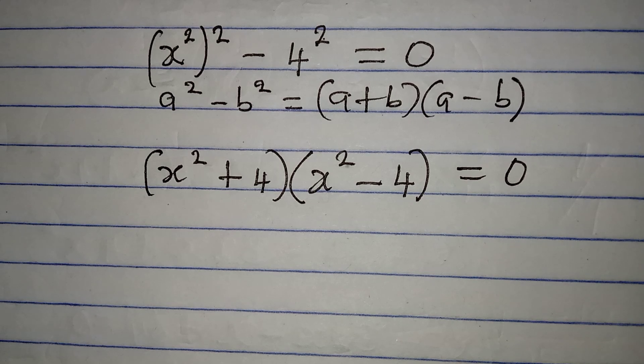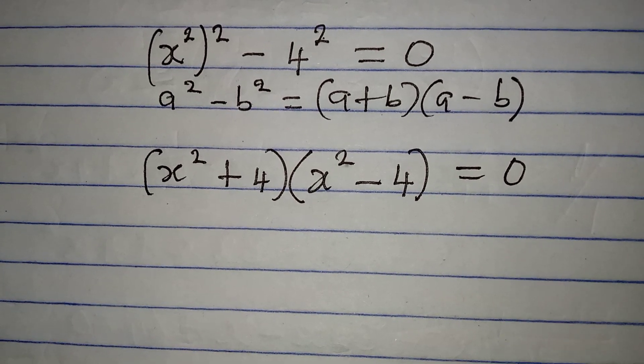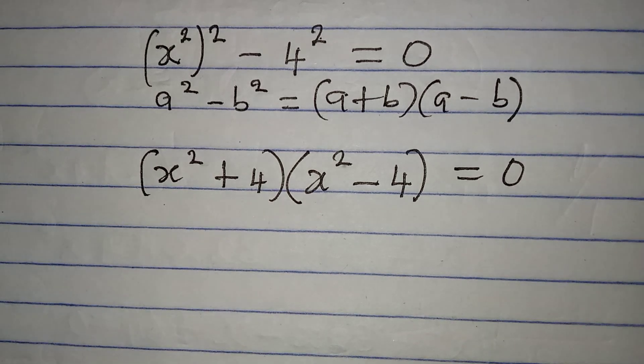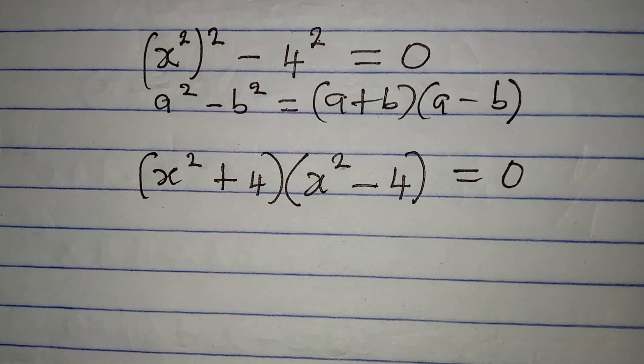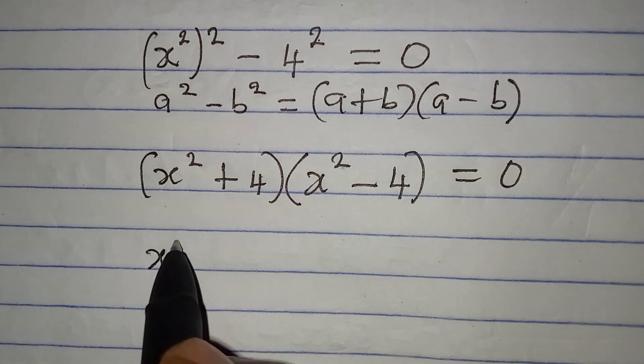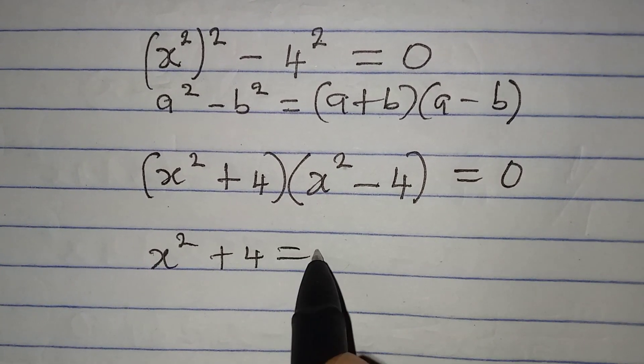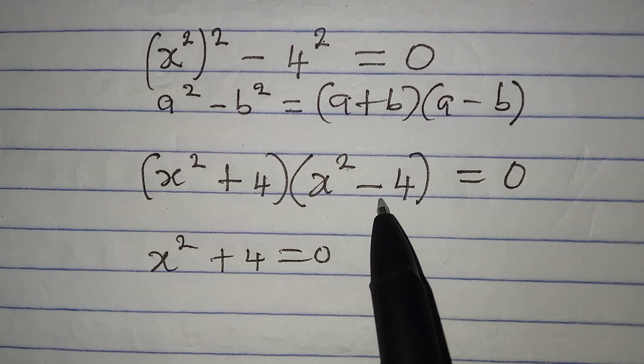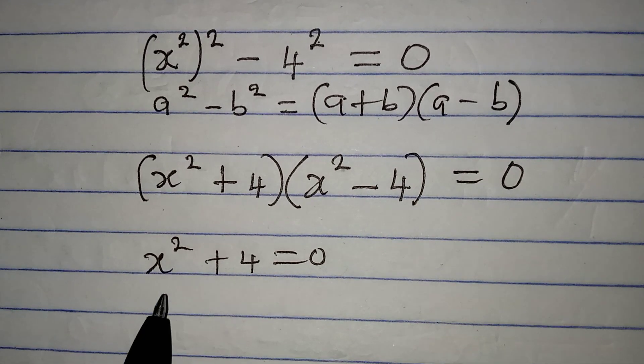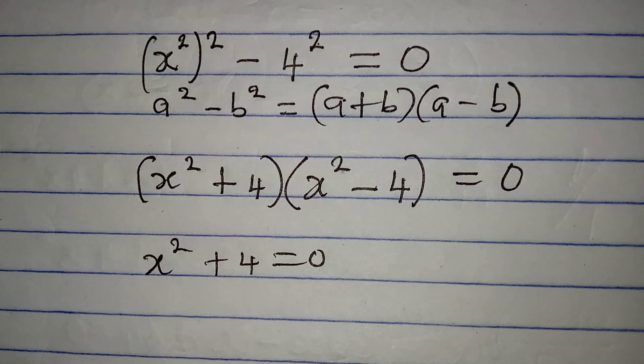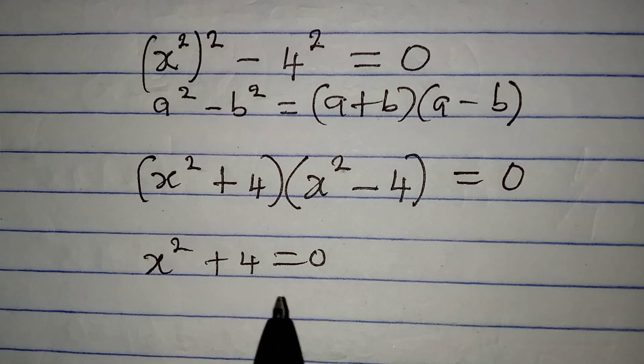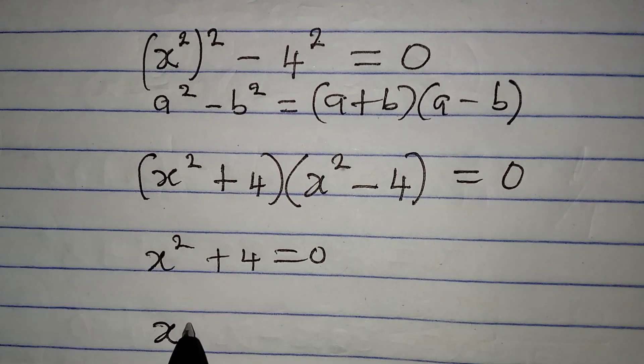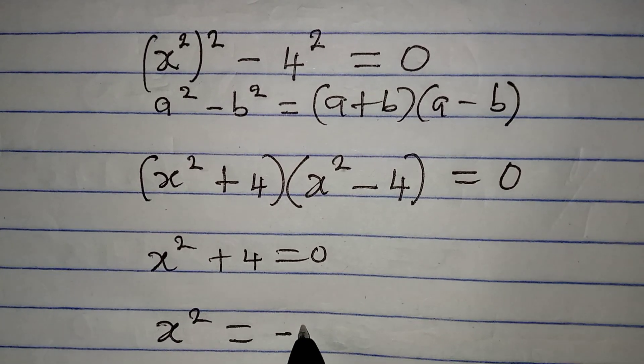Now I would like us to apply zero product rule. So if we do that, we'll have x squared plus 4 to be equal to 0. I will come back to pick what we have in the second bracket. But from here, it looks impossible for us to solve this. But then, let's see what we are going to do. This means x squared is equal to minus 4.